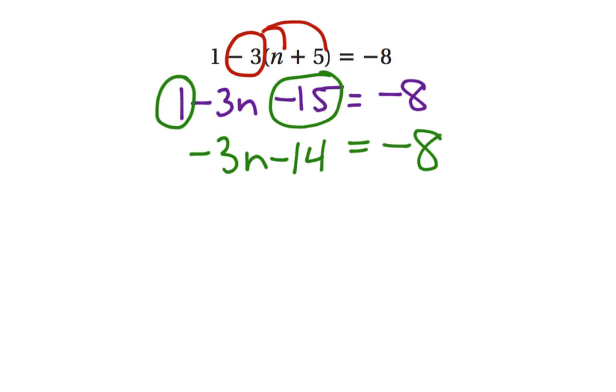Now we don't have any like terms on the same side to combine, so we're ready to undo our steps. We add 14 to both sides: negative 3n equals positive 6.